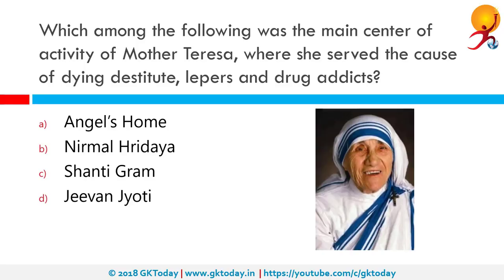Which among the following was the main center of activity of Mother Teresa, where she served the cause of the dying, destitute, lepers, and drug addicts? The correct answer is Nirmal Hriday. Kalighat, the home of Nirmal Hriday or pure heart, is a home for the sick, destitute, and dying established by Saint Mother Teresa in Kalighat, Kolkata, India.